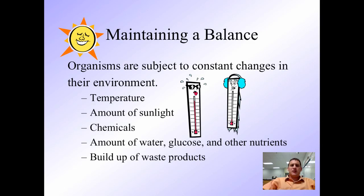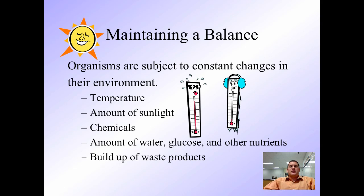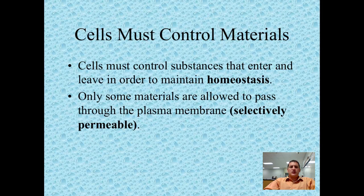The reason you have a cell membrane is because you want to maintain a balance. Organisms are always subject to constant change in their environment — things like temperature, the amount of sunlight, chemicals that we ingest, the amount of water, glucose, and other nutrients within our cells, and the buildup of waste products. We all have a need to maintain a balance within our cells, what's called homeostasis. That's why our cell membranes are selectively permeable — only some materials are allowed to pass through the plasma membrane. It selects what to let in and what to let out.